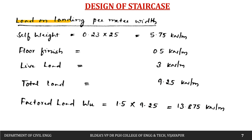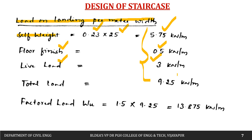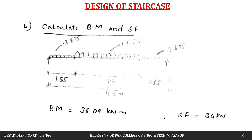Now let us calculate the load on the landing per meter width. Self-weight of the landing slab is 0.23 × 25 = 5.75 kN/m, floor finish is 0.5 kN/m, and live load is 3 kN/m. Total load is 9.25 kN/m; the factored load is 9.25 × 1.5 = 13.875 kN/m.